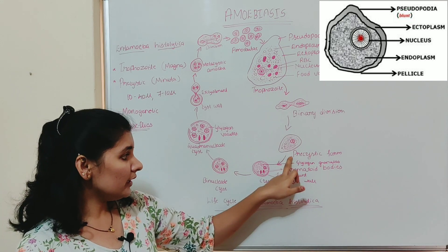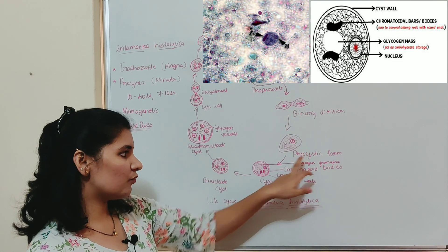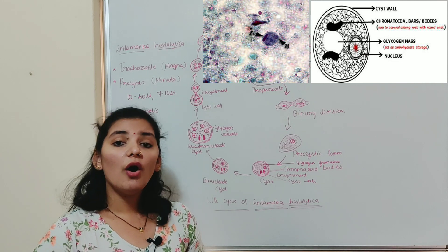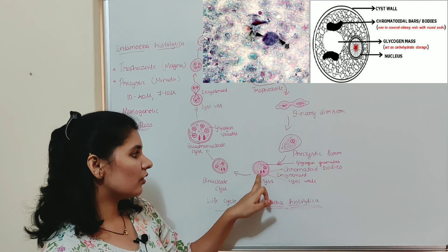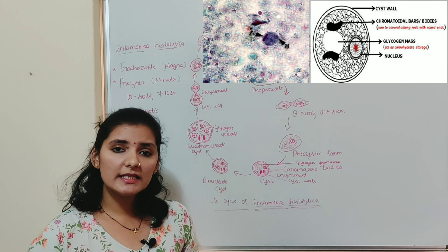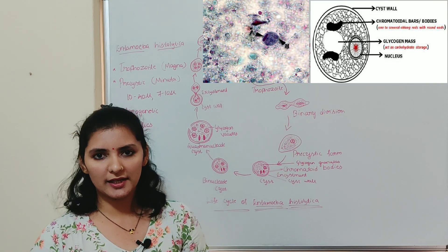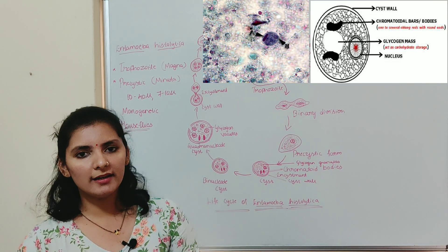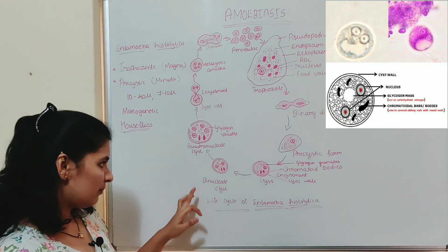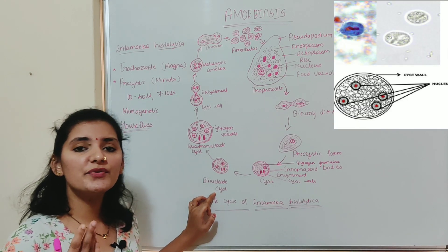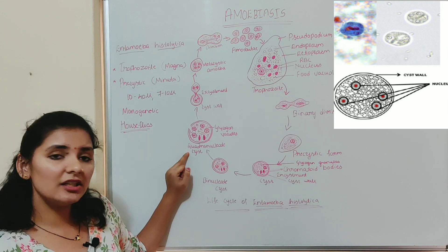The precystic form soon undergoes a process called encystation. Before encystation, it rounds up and eliminates food vacuoles; all food materials are stored as glycogen granules and black rod-like structures called chromatoid bodies. It then secretes a cyst wall around itself. At this stage the cyst is mononucleate — it has only one nucleus. The nucleus then divides twice: after the first division it becomes a binucleate cyst, and after the second division it becomes a quadranucleate or tetranucleate cyst.